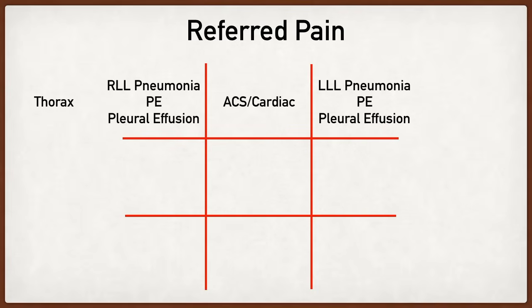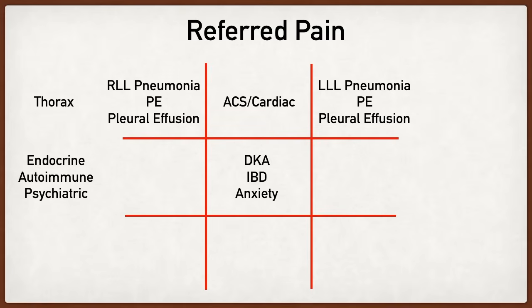Referred pain to the midsection of the abdomen is usually caused by endocrine, autoimmune, or psychiatric etiologies. Some examples include diabetic ketoacidosis, inflammatory bowel disease, or anxiety. Oftentimes these etiologies lead to generalized abdominal pain as well.